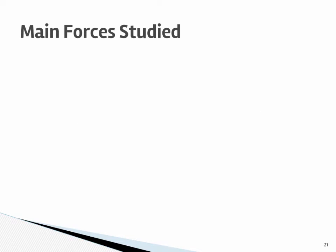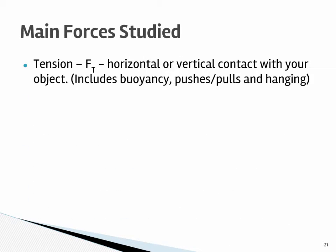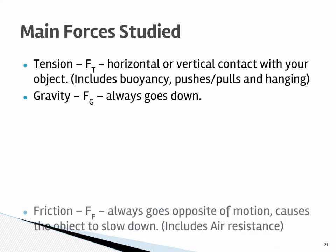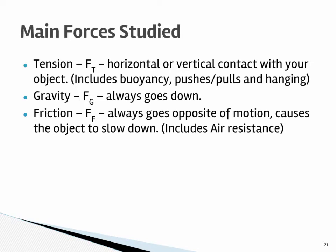In complete force notation, there are four forces we're going to study. Force of tension, which is horizontal or vertical, which is a push-pull. This includes buoyancy and hanging. Then we have the force of gravity, abbreviated Fg, always goes down. Then we have the force of friction. Goes the opposite of any motion and causes objects to slow down. We will include air resistance.